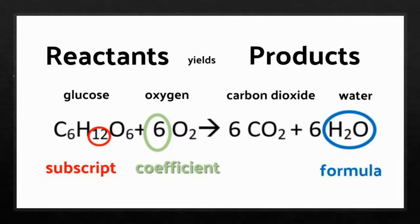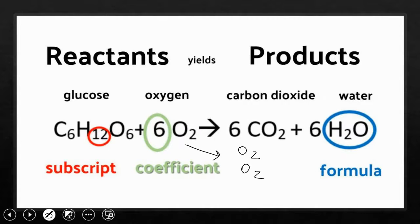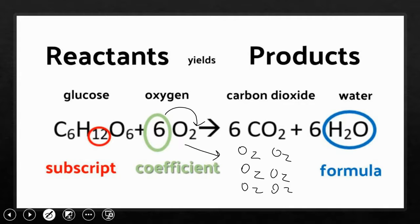Reactants yields products. The subscript — shown in red — tells you how many atoms. The coefficient — shown in green — tells you the number of molecules. For example, six molecules of CO2 is the same as drawing six individual CO2 molecules. You can count them as 2, 4, 6, 8, 10, 12, or you can multiply six times two and get 12. The formula — like H2O, CO2, O2, or C6H12O6 — is also a key part. So very important parts: reactants, products, subscript, coefficient, the formula, and yields or equals.